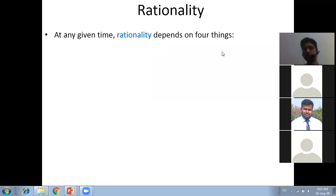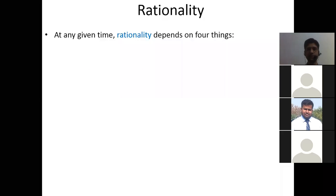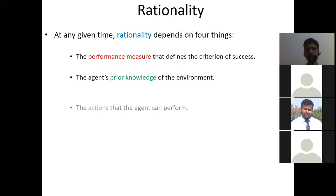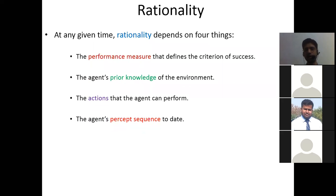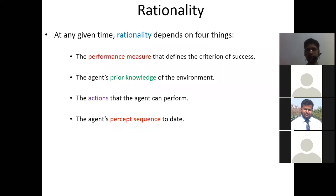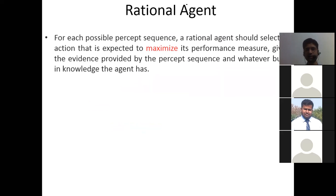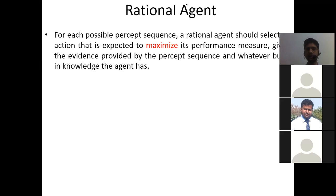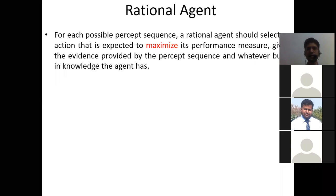Rationality depends upon four things. First one is the performance measure, prior knowledge, and the actions taken that the agent can perform. The agent's percept sequence to date — the percept sequence is all those things that it has seen till date in its life. For each possible percept sequence, a rational agent should select an action that is expected to maximize its performance measures, given the evidence provided by the percept sequence and whatever built-in knowledge the agent has.